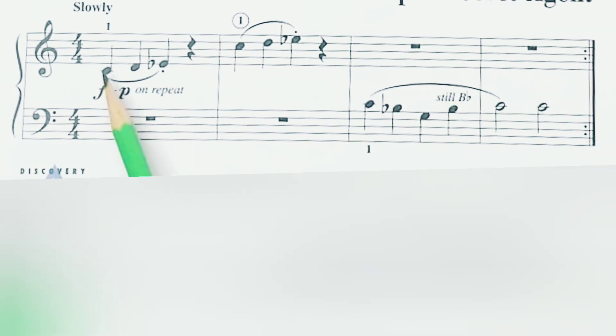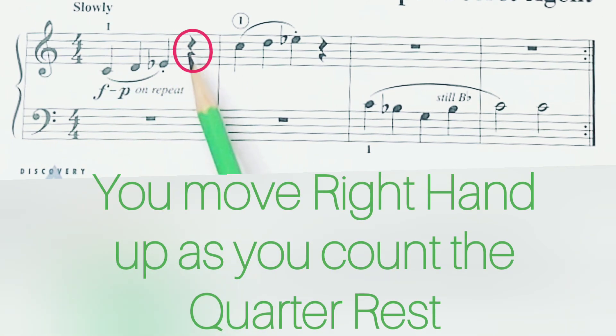When you play C, D, E, then you have a quarter rest. This quarter rest will help you to move your hand to the next C, which is treble C.